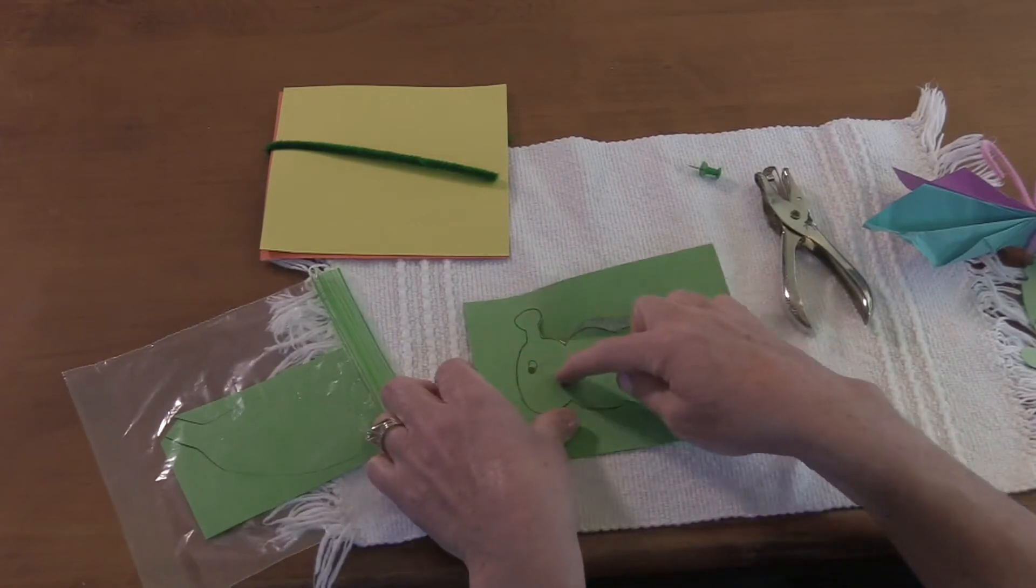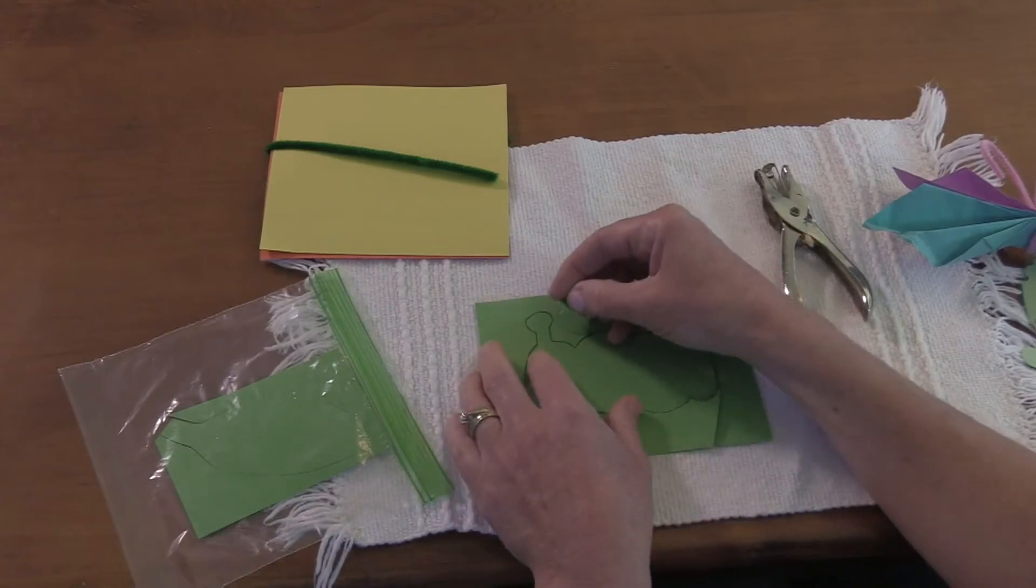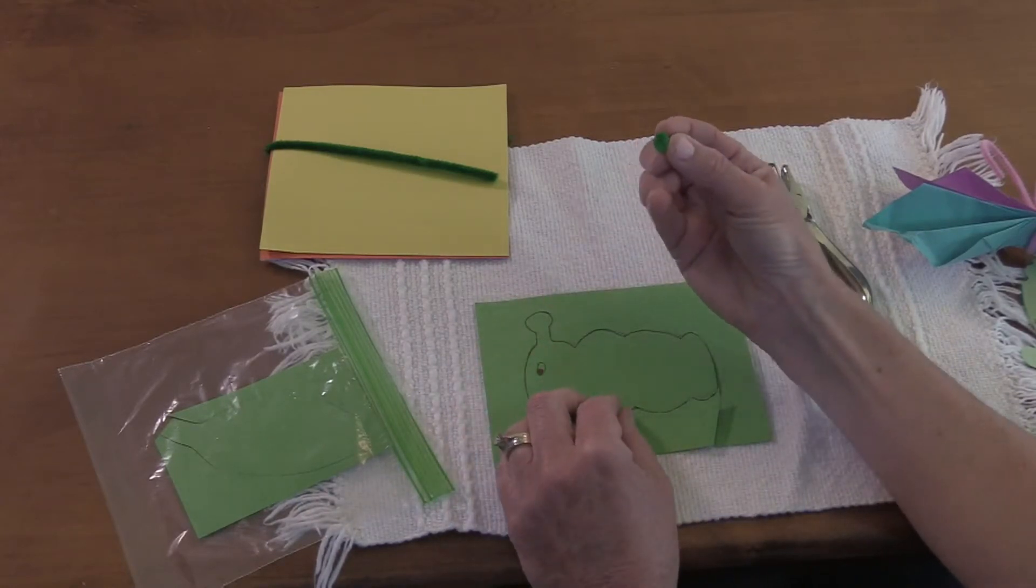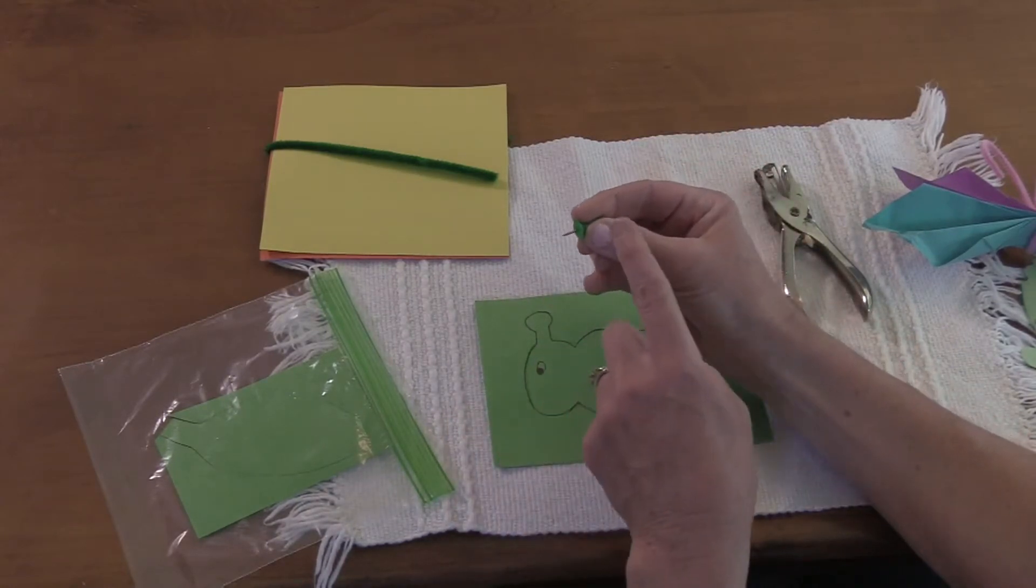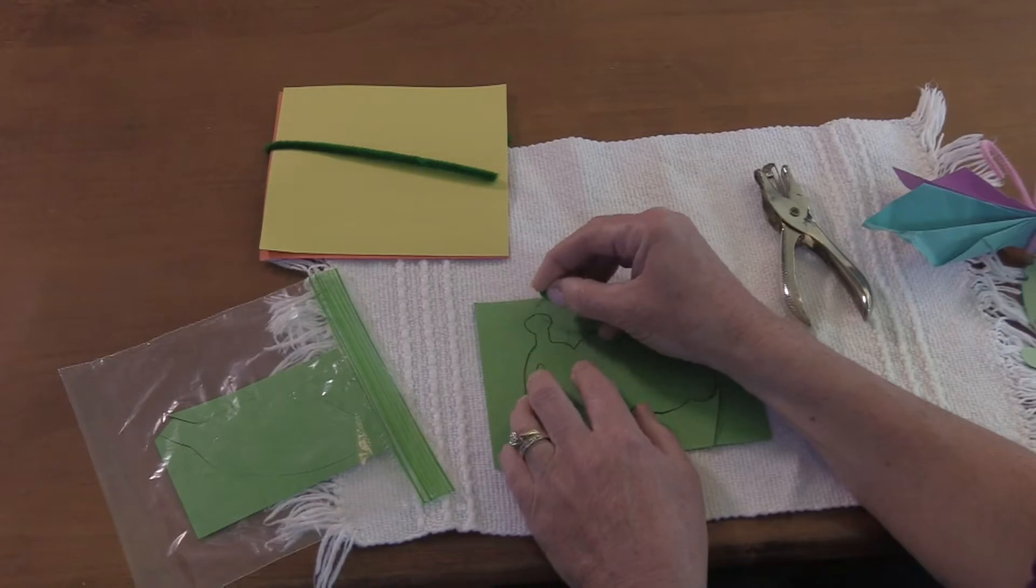You might choose to cut out your caterpillar or you can pin poke your caterpillar. When you pin poke, you hold the pin poker with your thumb and two fingers and you go around the black line until you get your shape out.